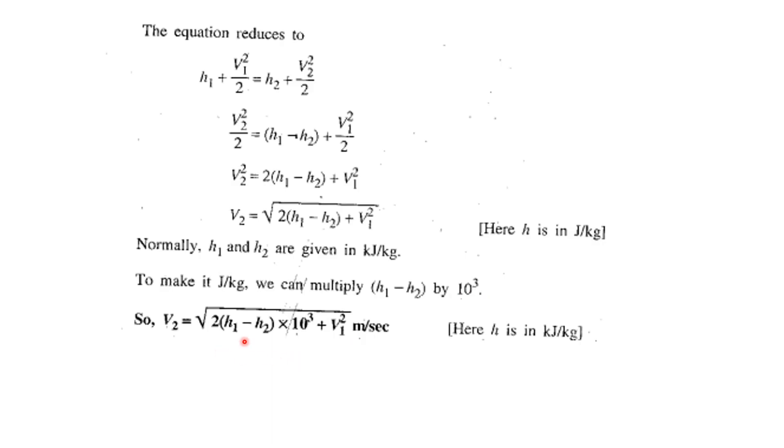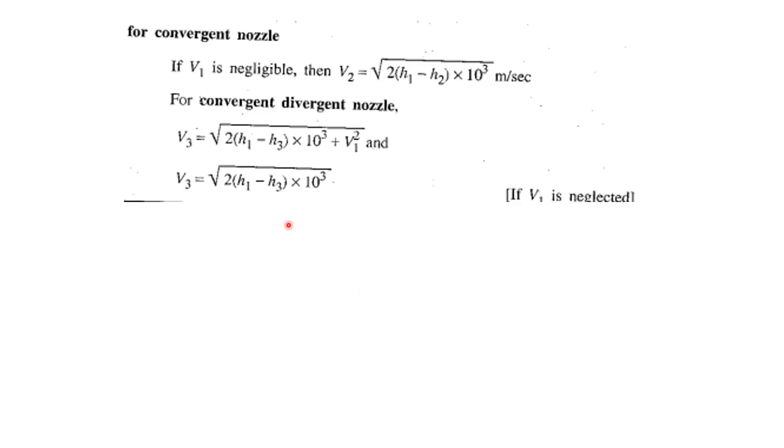For convergent nozzle, if V₁ is negligible, then we avoid the term V₁ in the velocity equation. V₂ = √(2(h₁ - h₂) × 10³) m/sec.